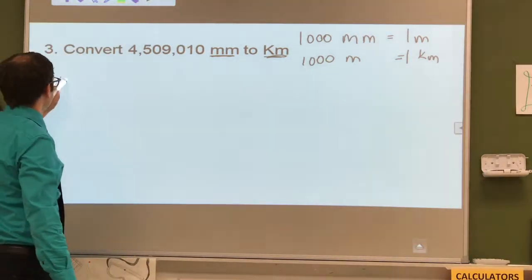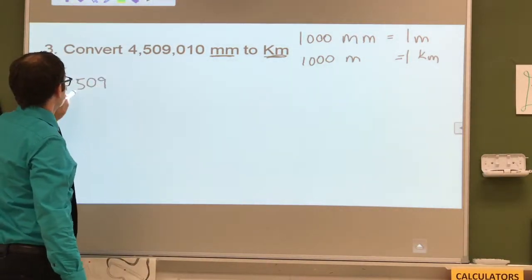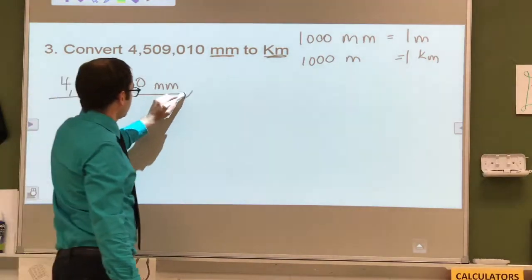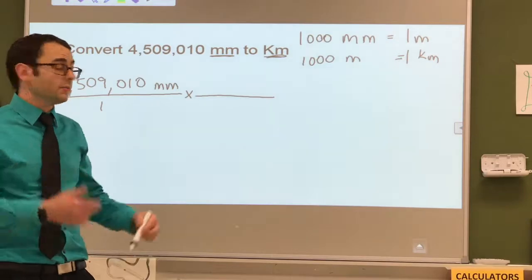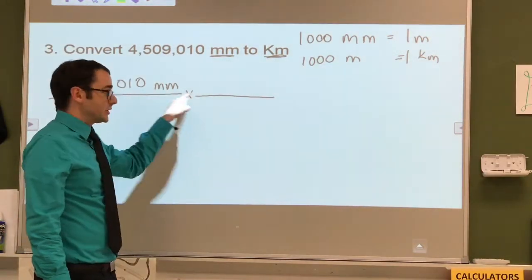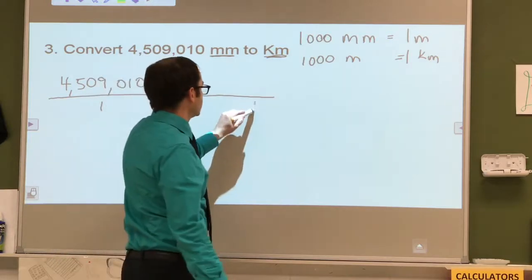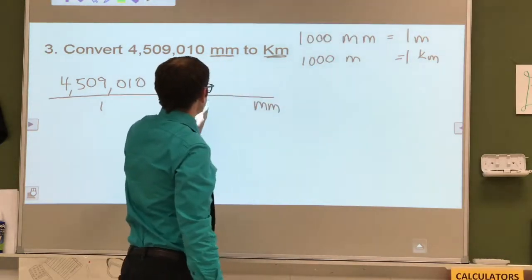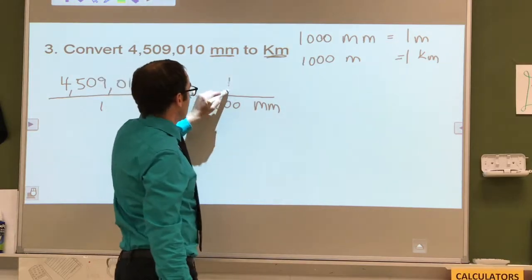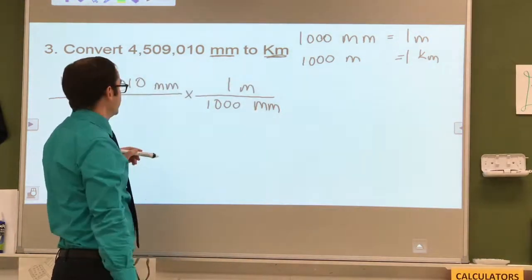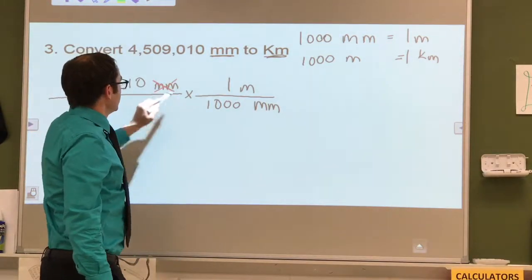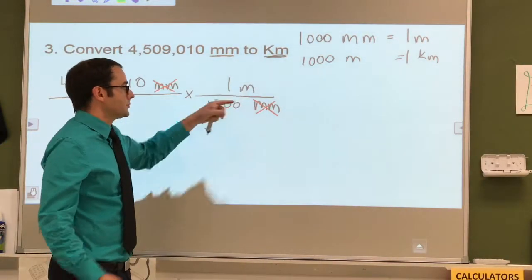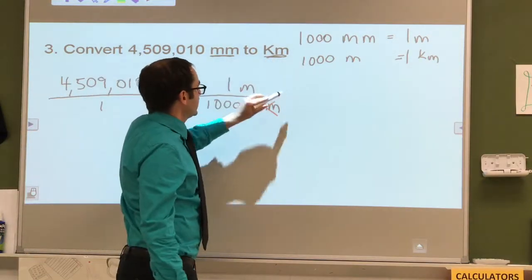So first thing we need is our number. What goes on the bottom? This is always what's going to go down here, because you need them to cancel out. So we're going to put millimeters down here, and then we're going to do the only one we have up here with millimeters. So that's going to be the thousand millimeters. And we're going to put meters on top, because we have that conversion from over there. So now millimeters cancels out. And you can see if we stopped the problem here, we would have meters, not what we're looking for. We're looking for kilometers, so that means we have to keep going.